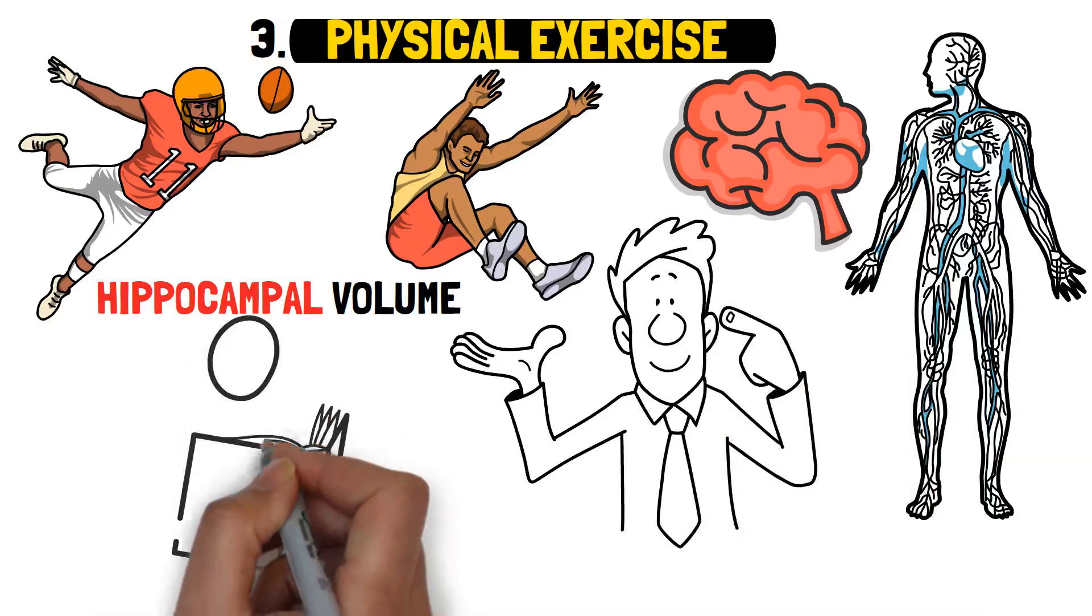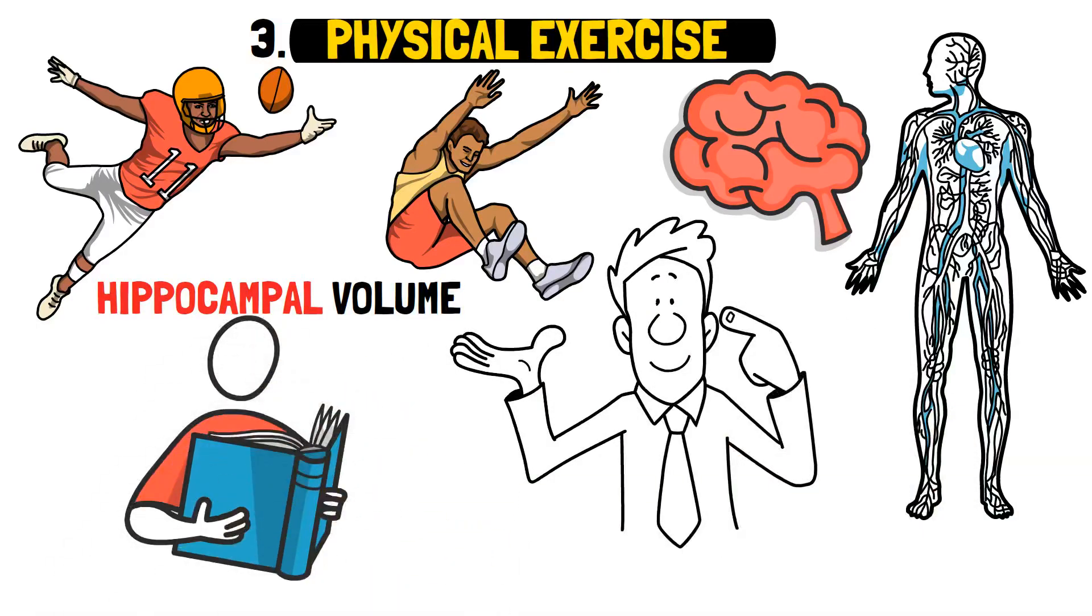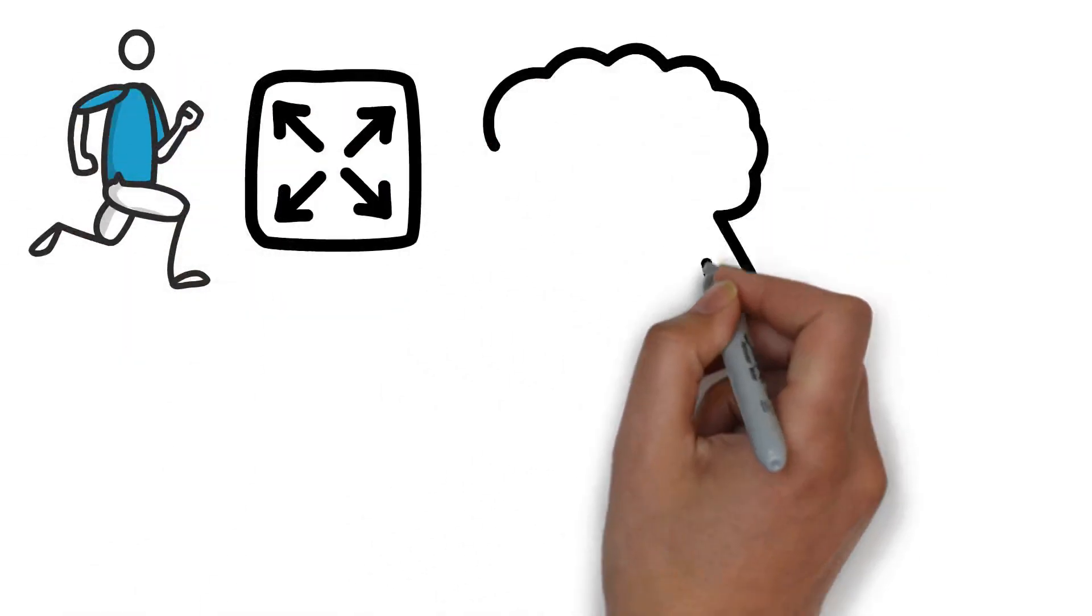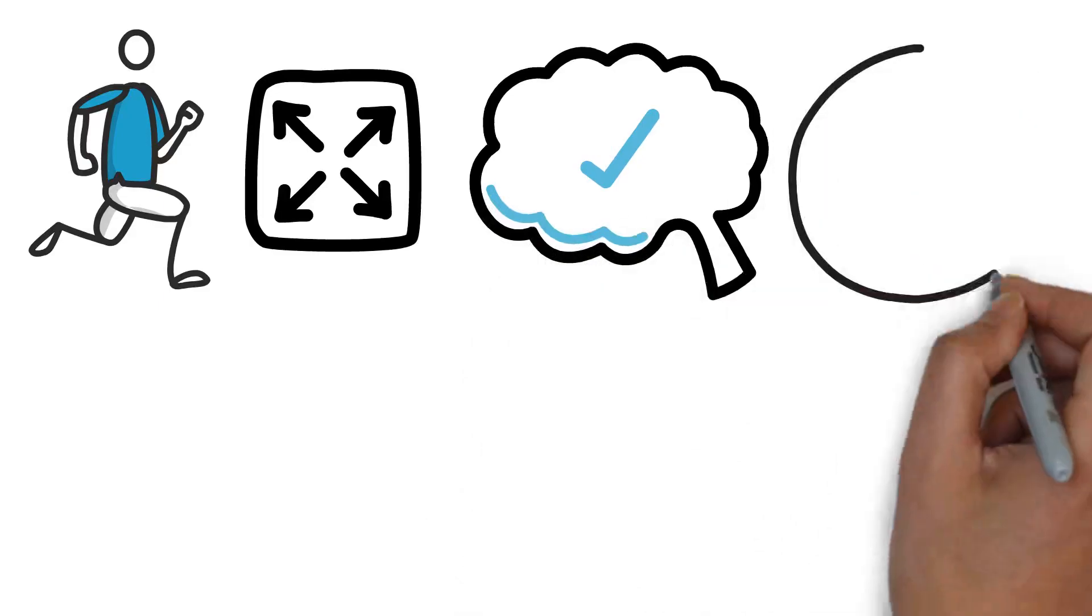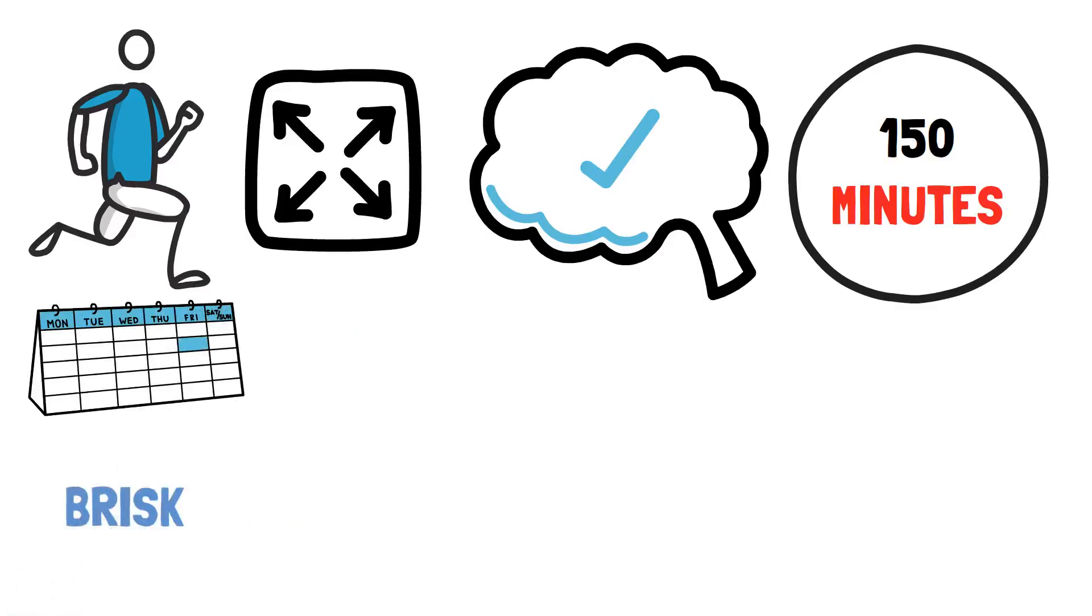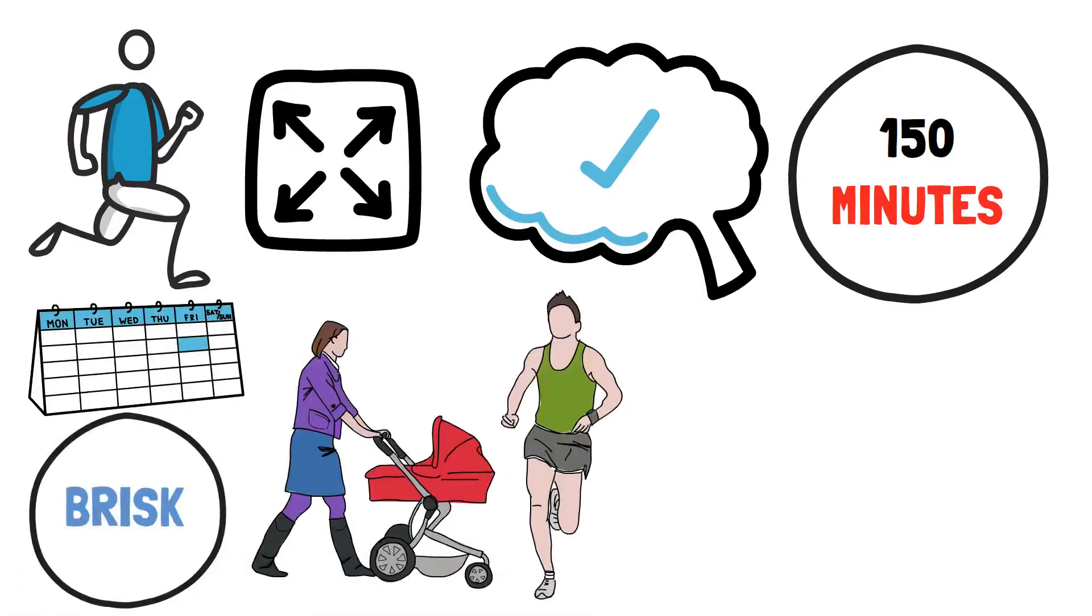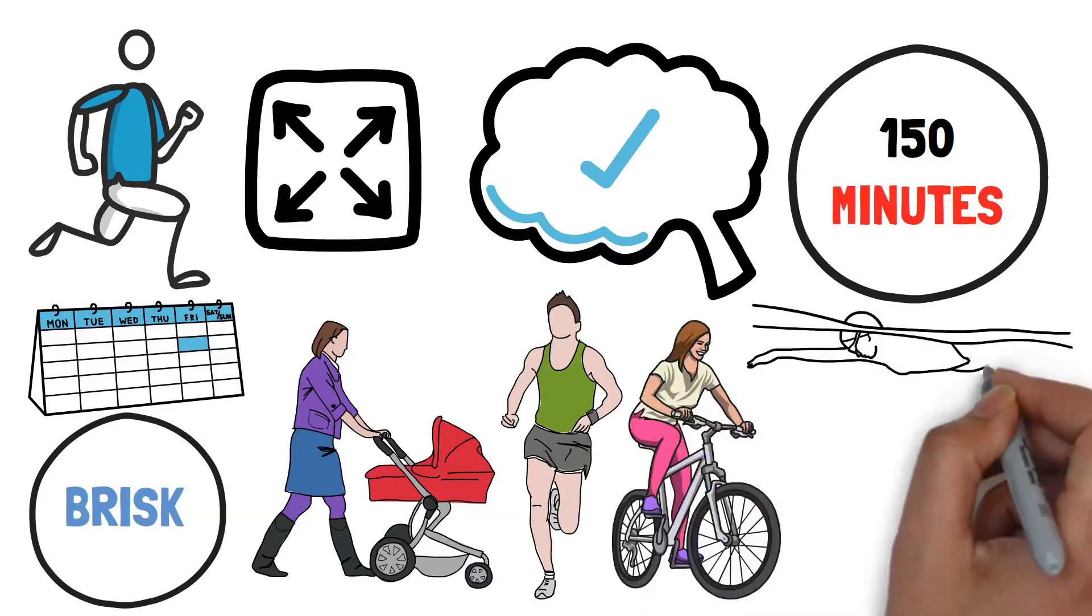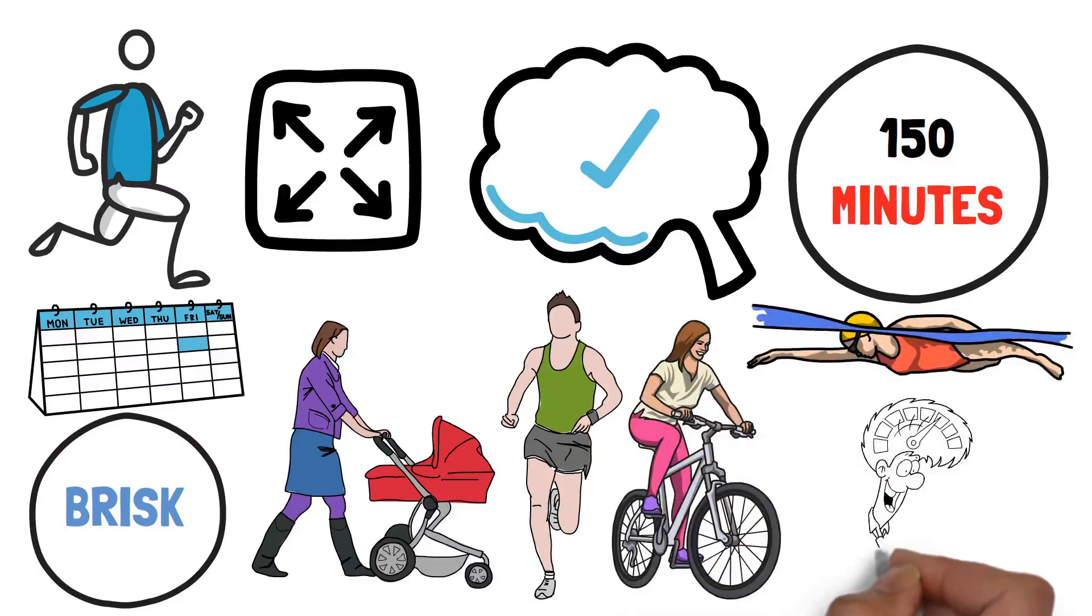A study from the University of British Columbia found that aerobic exercise can lead to an expansion of the hippocampus. Aim for at least 150 minutes of moderate-intensity aerobic exercise per week. This can include activities like brisk walking, jogging, cycling, or swimming. Additionally, incorporating strength training exercises can further support overall brain health.